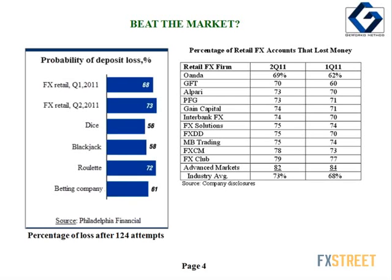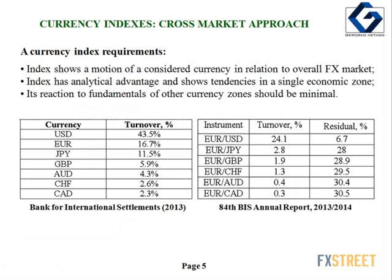So, what is the shortest path to widen the horizon without loss of simplicity? Composition of market indexes is one of the possible solutions. A currency index is an instrument which is used to show the motion of a considered currency in relation to an overall fixed market. Most liquid instruments should be taken into account.